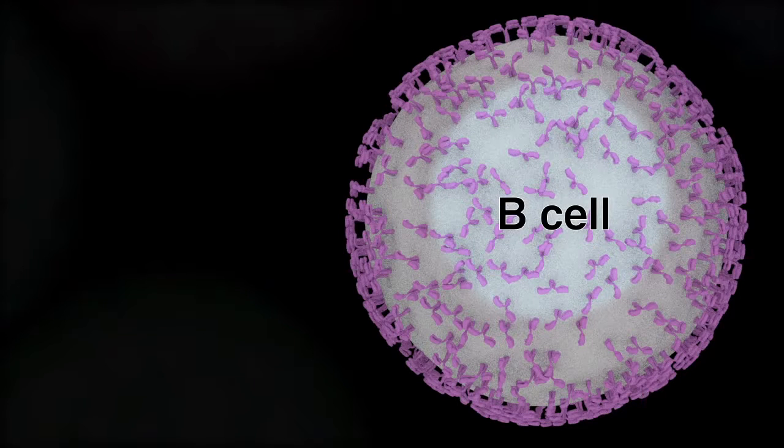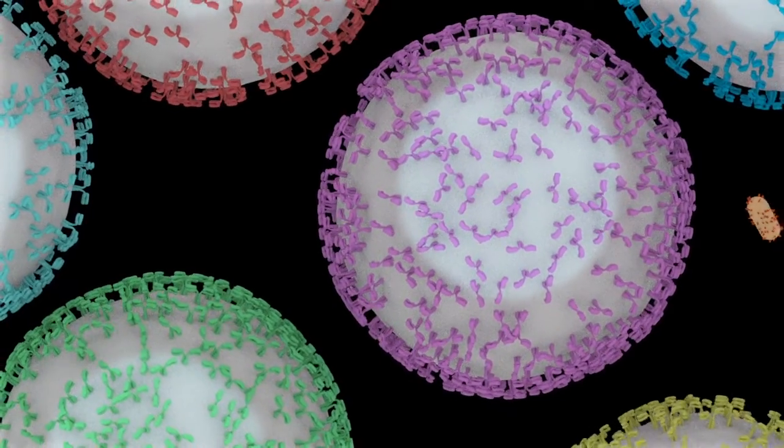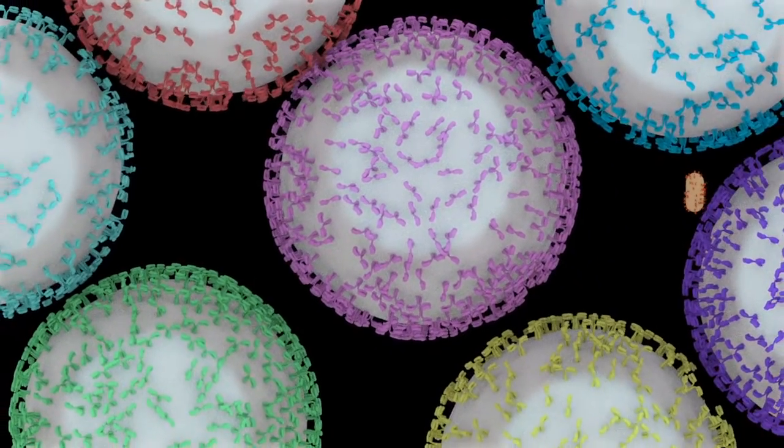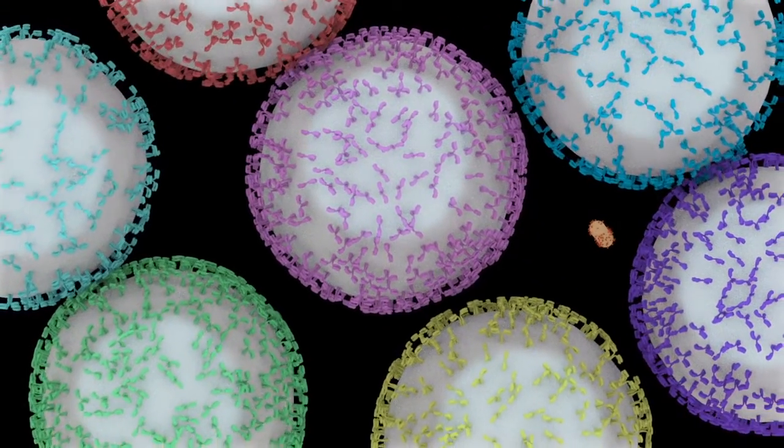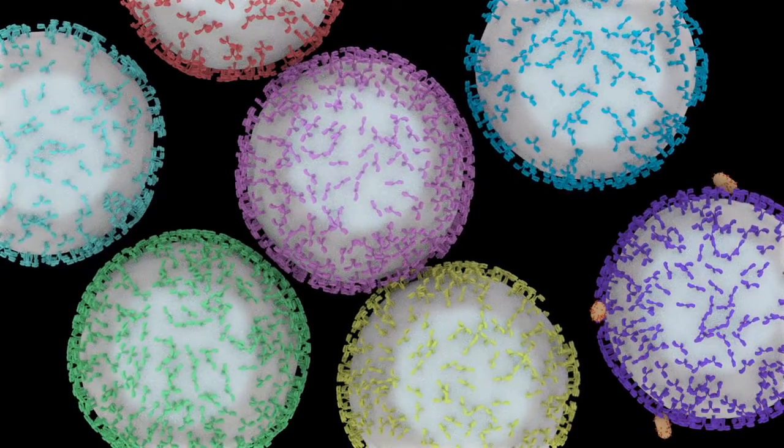Antibodies are produced by specialized cells within the immune system called B lymphocytes or B cells. The immune system recognizes a wide array of antigens by producing millions of different types of antibodies, each recognizing a different antigen, with each B cell producing only one particular antibody.